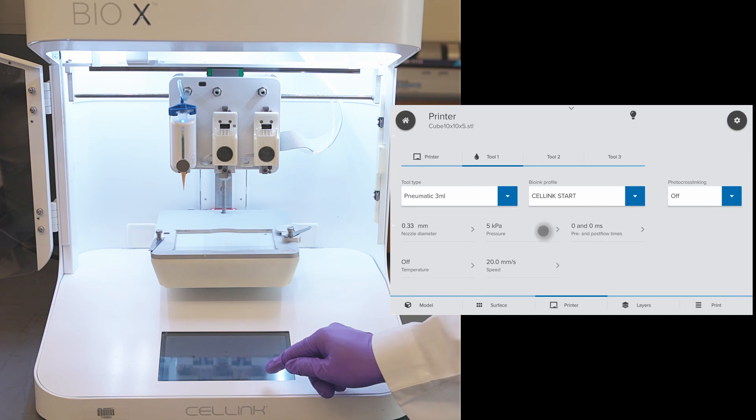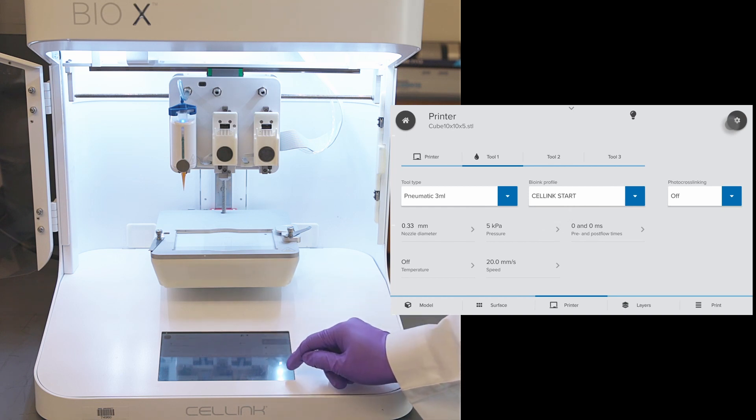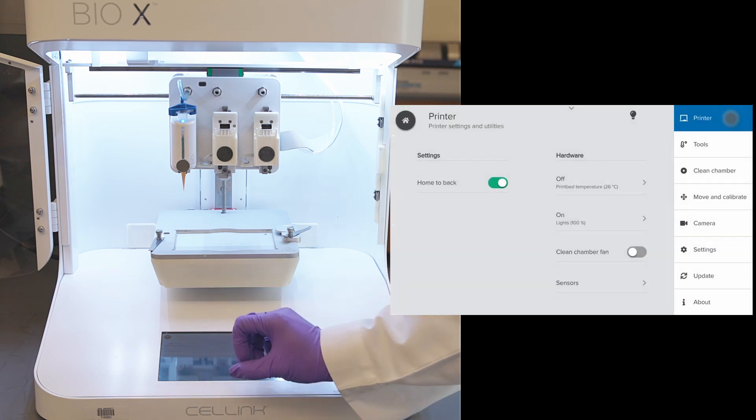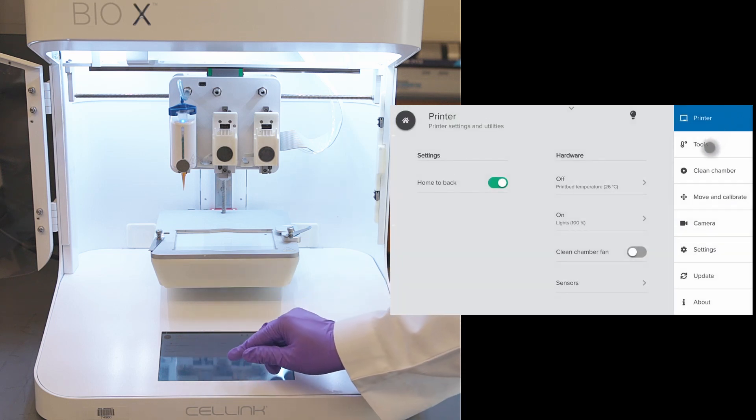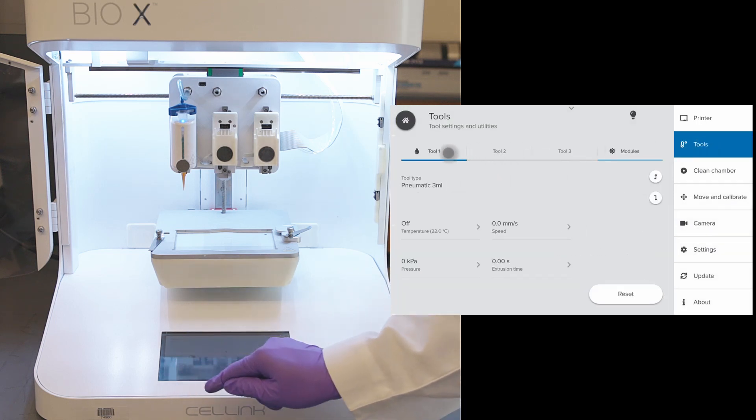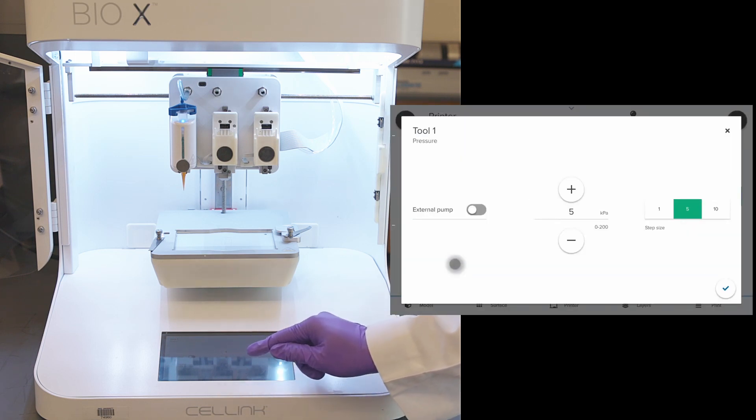Next is the pressure. If you are working with new material, we are not sure about the pressure needed for proper extrusion. In this case, click on the settings and go to tools. Select tool 1, where we have mounted the tool head. Click on pressure to optimize extrusion pressure.